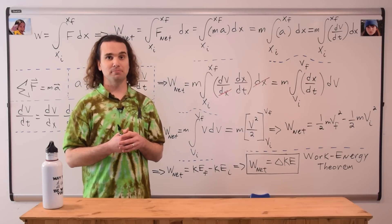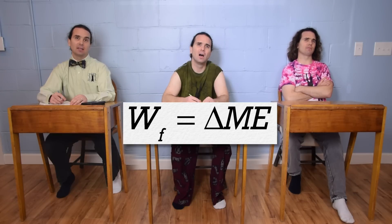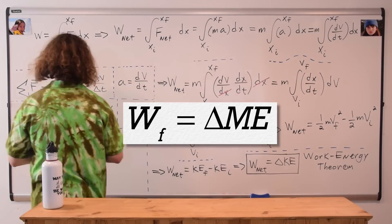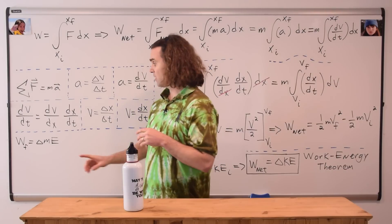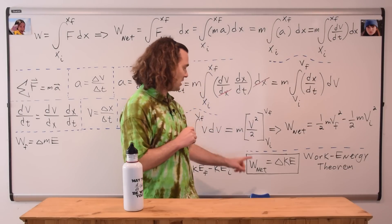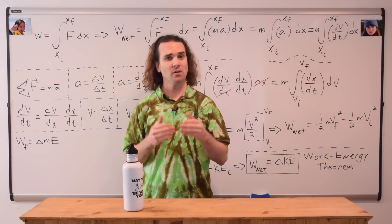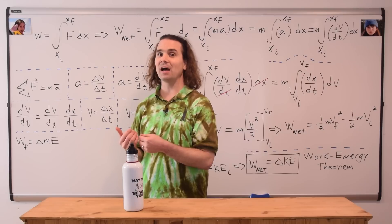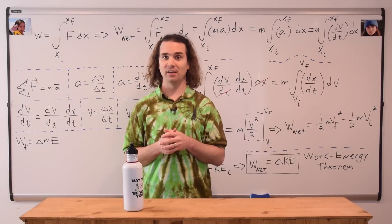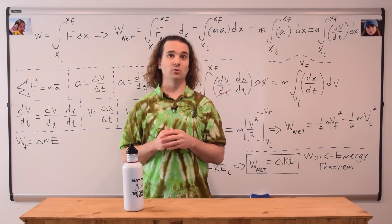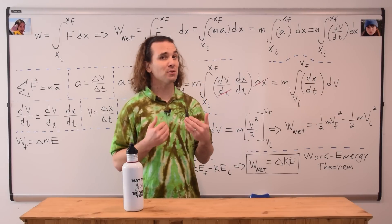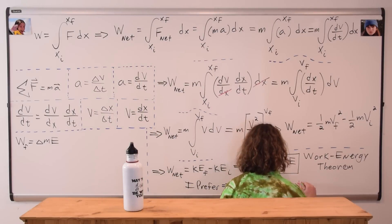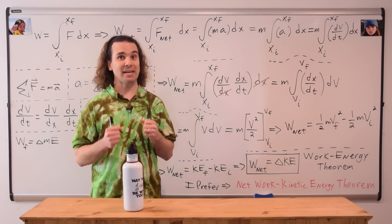Wait a minute — that looks just like the work due to friction equals change in mechanical energy equation. That is a good point. Notice how similar these two equations are: work due to friction equals the change in mechanical energy, and net work equals change in kinetic energy. Both have work on the left-hand side and change in energy on the right-hand side. Students often confuse the two, which is why I prefer not to call this just the Work Energy Theorem, but rather the Net Work Kinetic Energy Theorem.